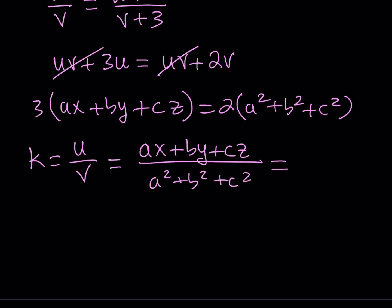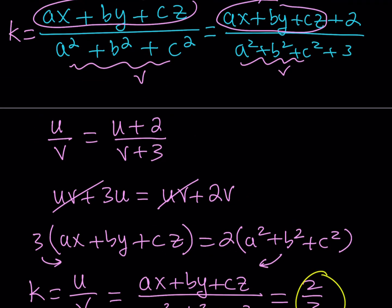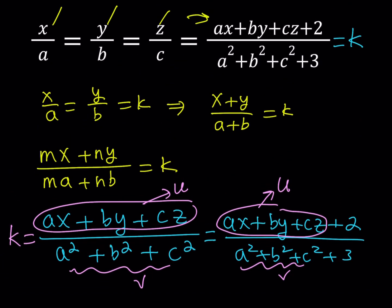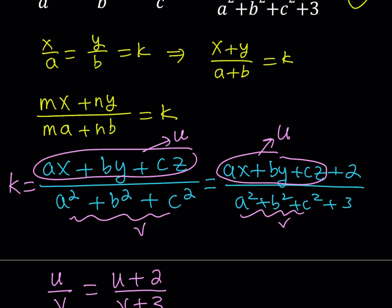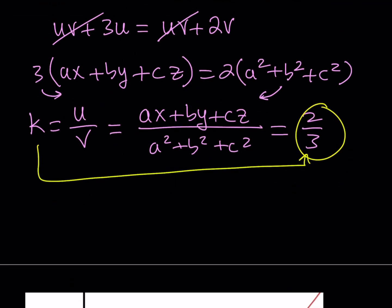So what is u over v? It's ax plus by plus cz over a squared plus b squared plus c squared. But from here, if you divide both sides, you're going to get two thirds. From here, we get something important because we get the k value. k equals two thirds. That is important because we now have a numerical value for k.